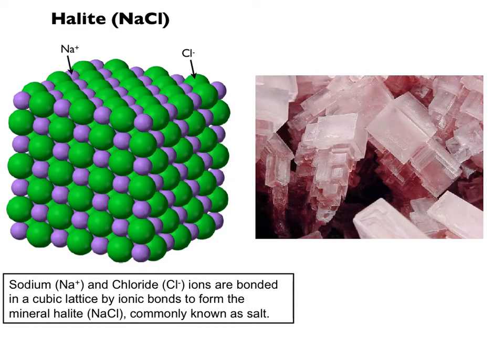Let's go back to the halite example. Halite is a very simple mineral with only two elements, and we can write its formula as NaCl — for every one atom of sodium there is one atom of chlorine, and these alternate to form perfect little cubes. On the left we've got the gumball atomic-scale model of halite, and on the right is a microscope image of halite crystals forming perfect little cubes. If you've ever sprinkled salt onto your food, you have seen little cubes of halite.